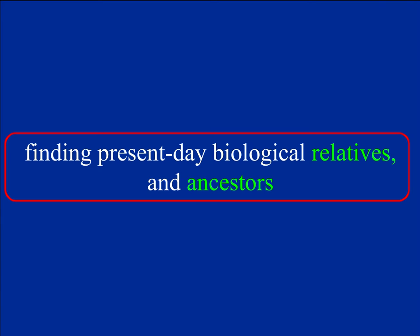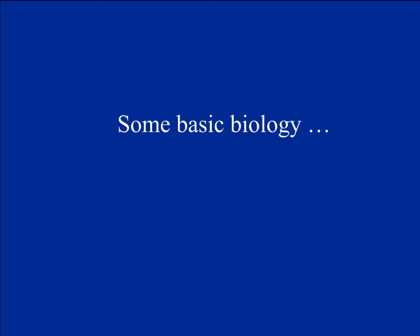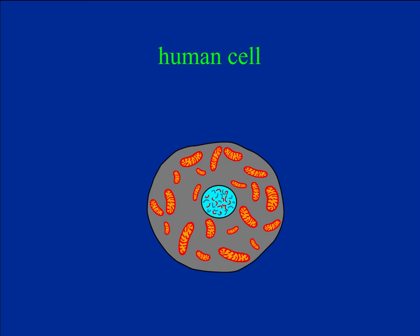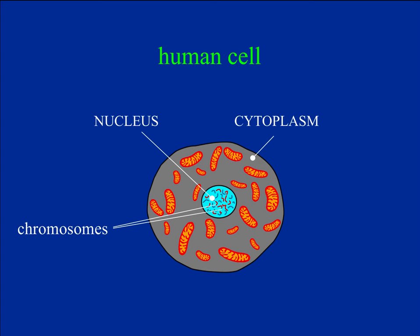Let's look at how you go about finding present-day biological relatives and ancestors. But first, we need to look at some basic biology. You can make an analogy of a human cell with a fried egg — the yolk is the nucleus, and the egg white is the cytoplasm. The nucleus contains chromosomes, which carry almost all your genetic material, your DNA. The cytoplasm contains peculiar organelles called mitochondria, which also carry some DNA. We'll deal with mitochondria later; for now we'll concentrate on the nucleus.